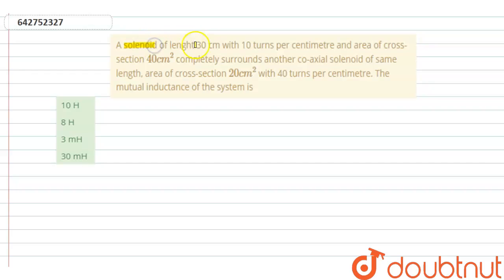solenoid of length 30 centimeters with 10 turns per centimeter and area of cross-section 40 centimeter square, completely surrounded by another coaxial solenoid of same length, area of cross-section 20 centimeter square with 40 turns per centimeter. So find the mutual inductance of this system. Right, now given is N₁ and N₂.